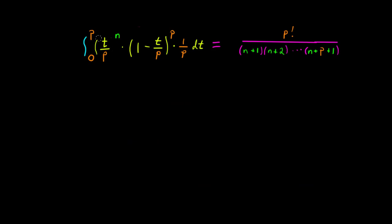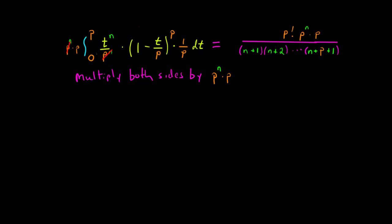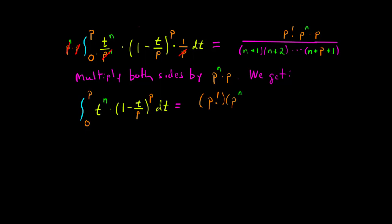Let's bring that equation to the top of the page. I'm going to rewrite t over p to the n as t to the n over p to the n. Then to simplify the left-hand side, I multiply both sides by p to the n times p. The p to the n's cancel in the integral and the p's cancel, leaving the integral from 0 to p of t to the n times 1 minus t over p to the p dt. That equals p factorial times p to the n times p, all over n plus 1 times n plus 2, all the way up to n plus p plus 1.